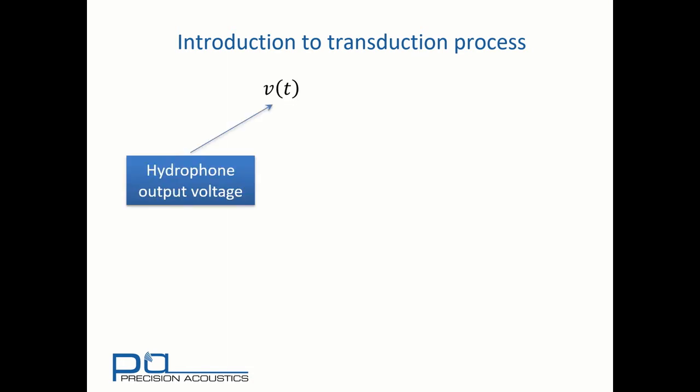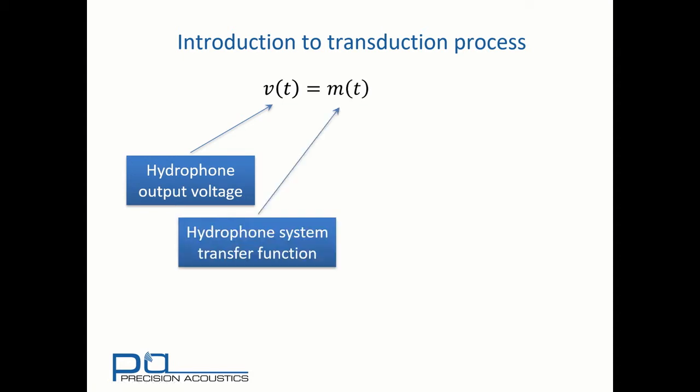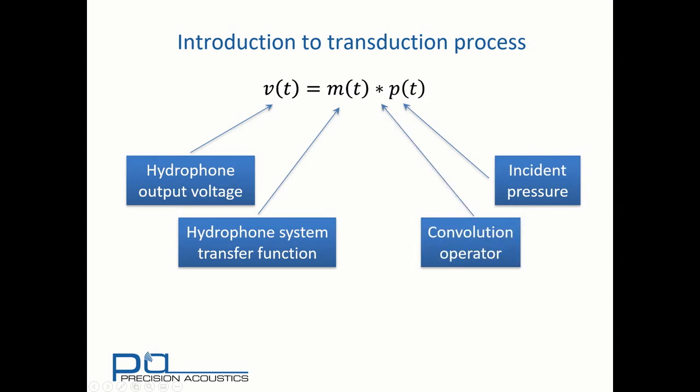When we connect a hydrophone to a data acquisition device, such as an oscilloscope, the waveform we measure is the hydrophone output voltage. This depends upon the hydrophone system transfer function and the incident pressure waveform that the hydrophone experiences, and these two quantities are convolved together.